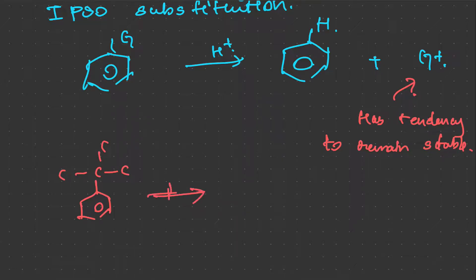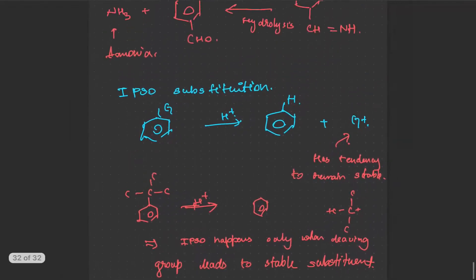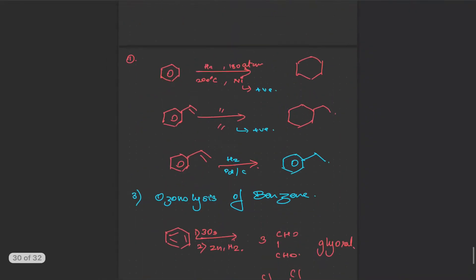For example, you can see this type of reaction in this case. Let's say if in the acidic medium the H+ goes and you know that this carbon cation that will be formed is very stable, and so due to which I get benzene. So make a note that ipso attack or ipso substitution happens only when the leaving group leads to a stable substituent.